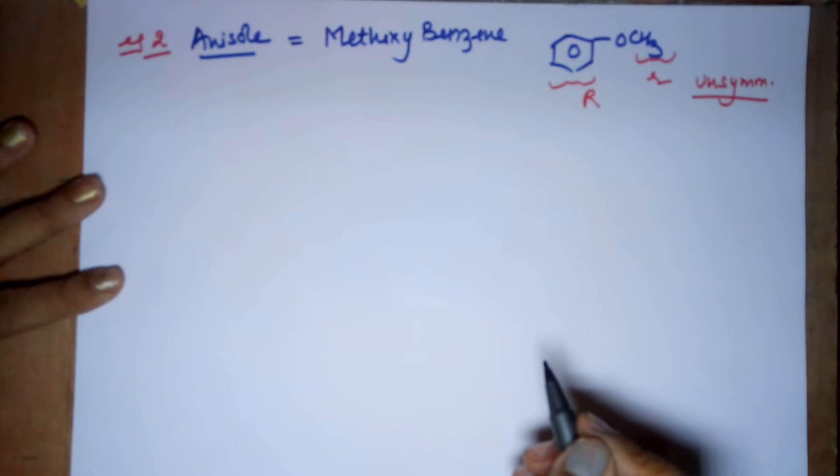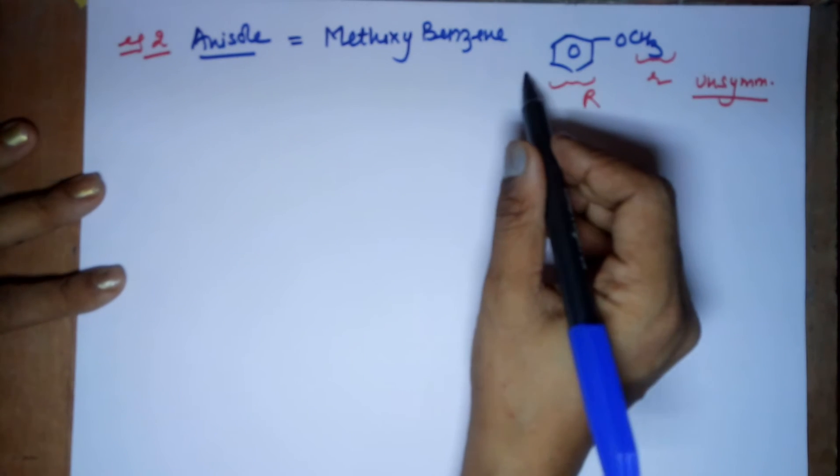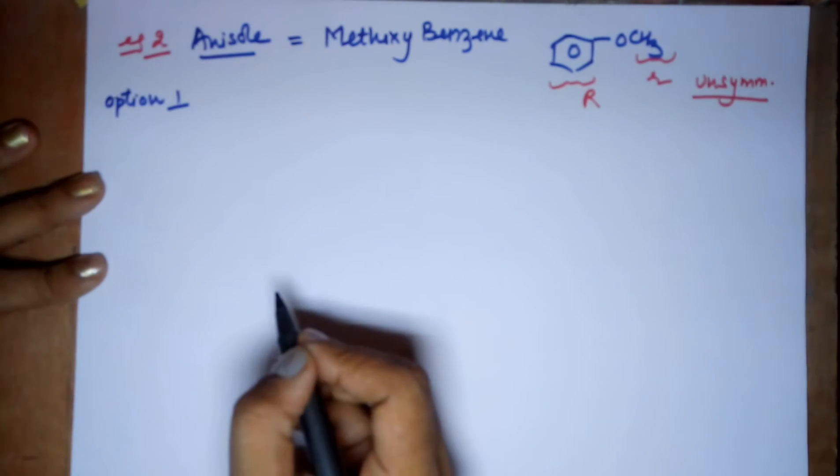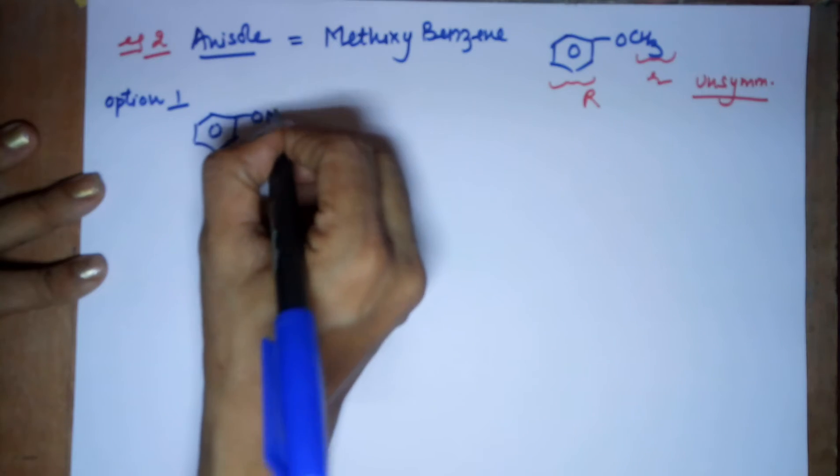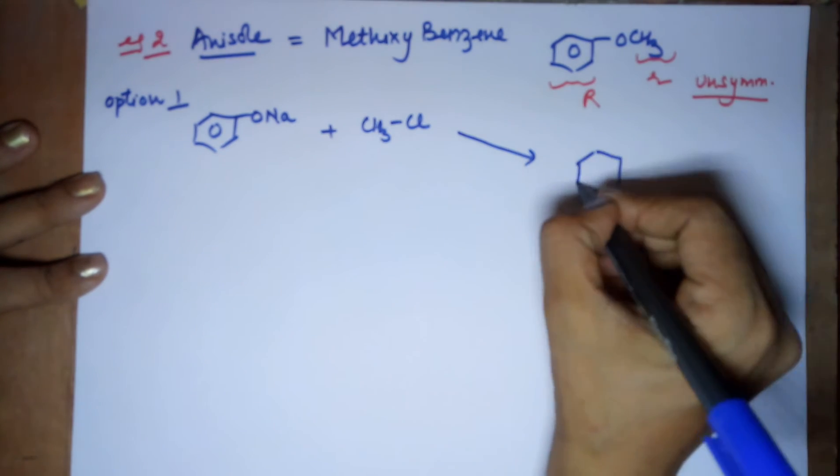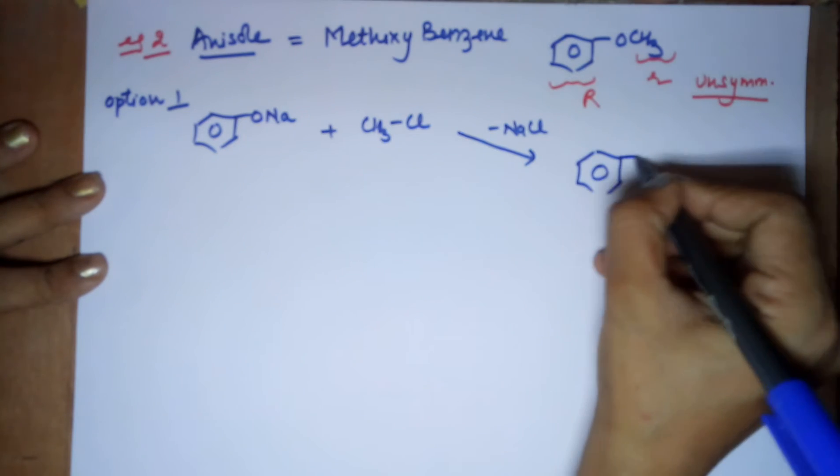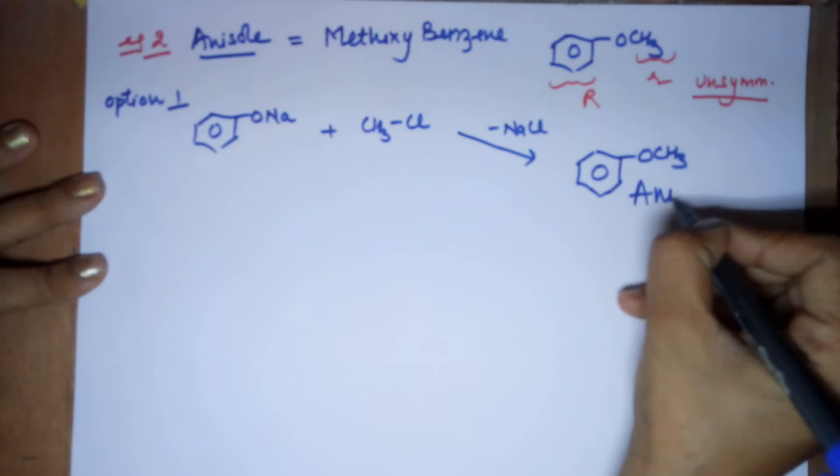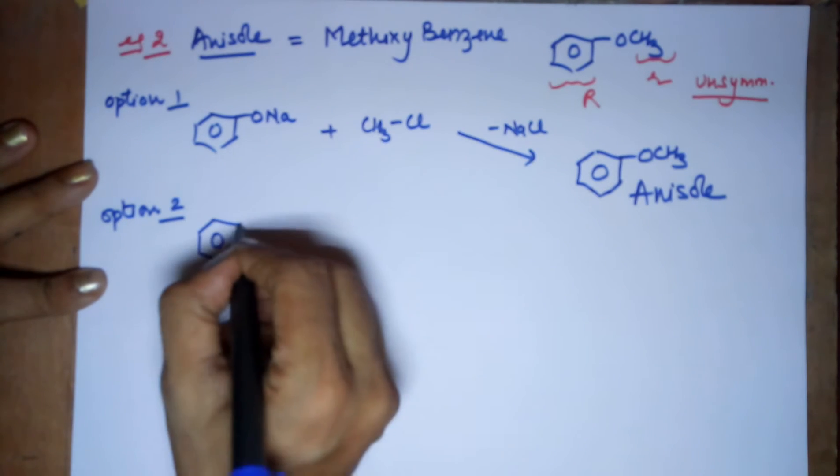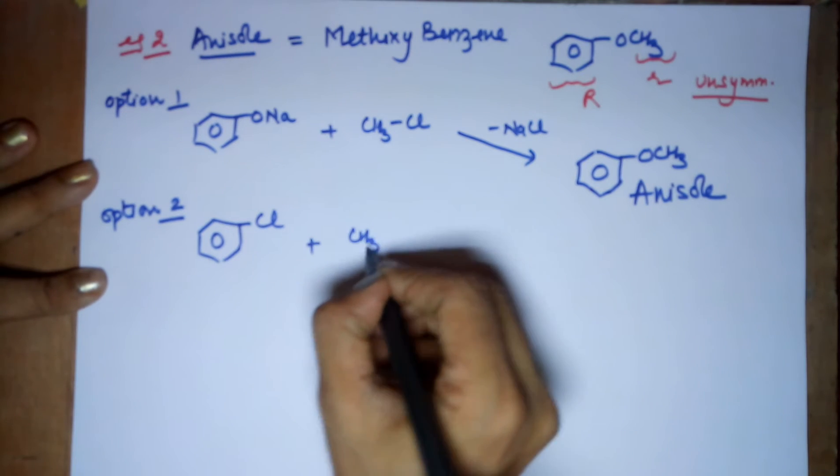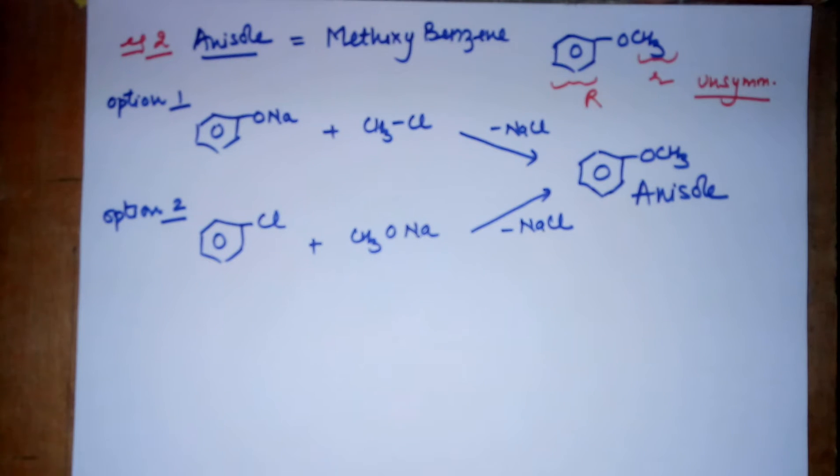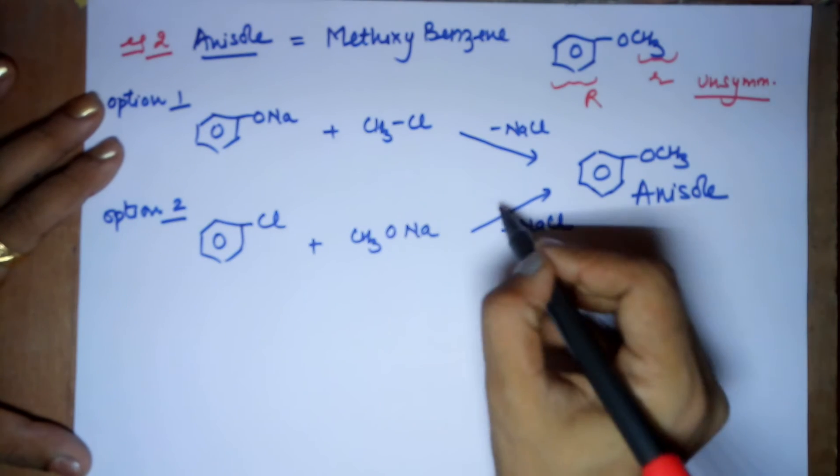Now how can I prepare this? Since it is unsymmetrical and both of them are not primary, this is a phenyl alkyl group. This is 1 degree. So I have 2 options. I will use both the options and then we will come to a conclusion which is correct. Option 1. I use O-Na of the benzene side and Cl from the methyl side. That is one option. And I am expecting minus NaCl and I am ending up in anisole. That is one way of preparing. There is another option. Option 2 is that you use the halide of the benzene. And you can use O-Na from CH3. In this case also I am expecting NaCl to be removed.